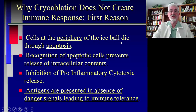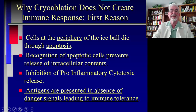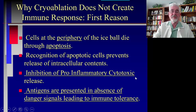Cells at the periphery of an eyeball die through apoptosis. Recognition of apoptotic cells prevents release of intracellular contents, and there is an inhibition of pro-inflammatory cytotoxic release. We need this inflammatory cytotoxic release in order to create an environment where the Tregs will be inhibited and the immune system will come and fight the cancer. Antigens are presented in absence of danger signals, leading to immune tolerance.